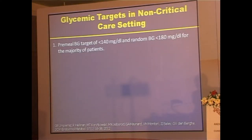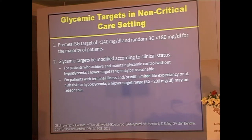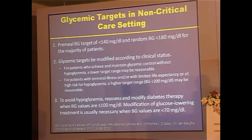In non-critical situations: pre-meal below 140, random blood glucose below 180 in the majority of patients. Based on clinical status, you may need to modify — for example, in terminally ill patients with limited life expectancy and high risk of hypoglycemia, a glucose range up to 200 may be acceptable. The American College of Physicians in the Annals of Internal Medicine last year said very tight control is not necessary in such situations, but keep it below 200 and avoid hypoglycemia.